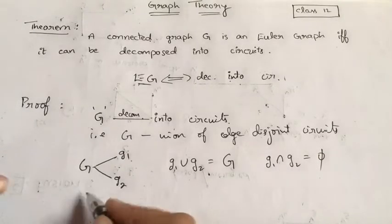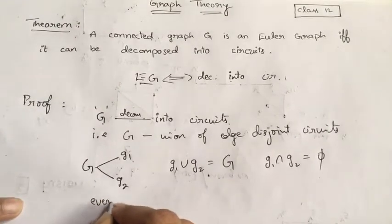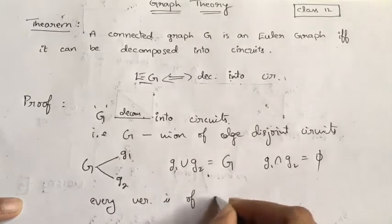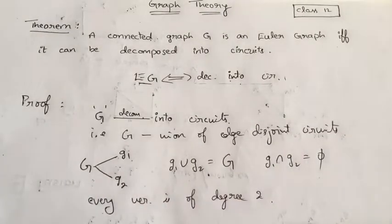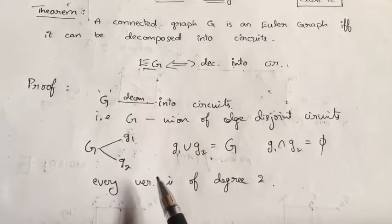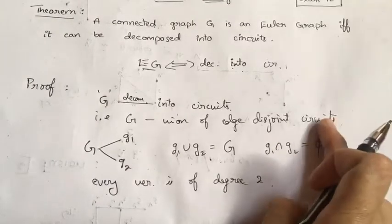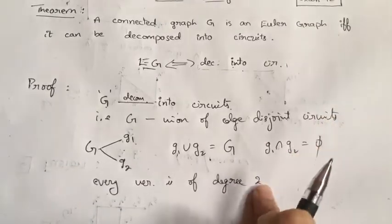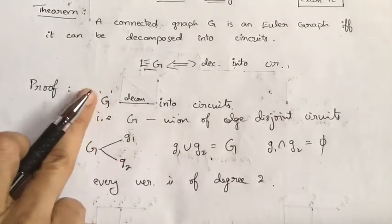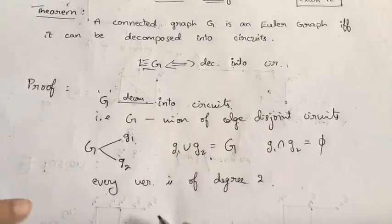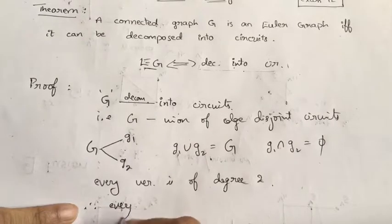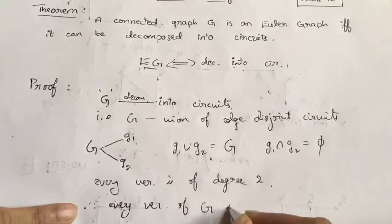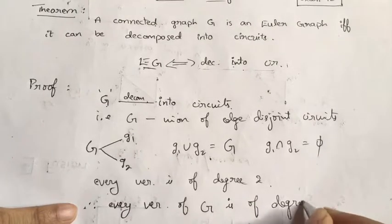We know that in a circuit every vertex is of degree 2. Therefore, in the whole graph G, when I combine all circuits to get G, every vertex of G is of even degree.